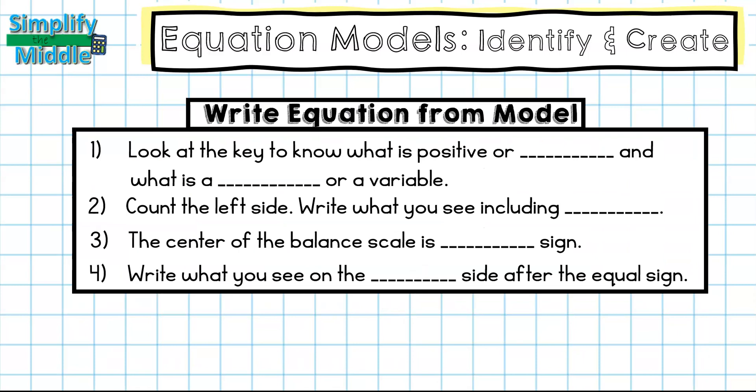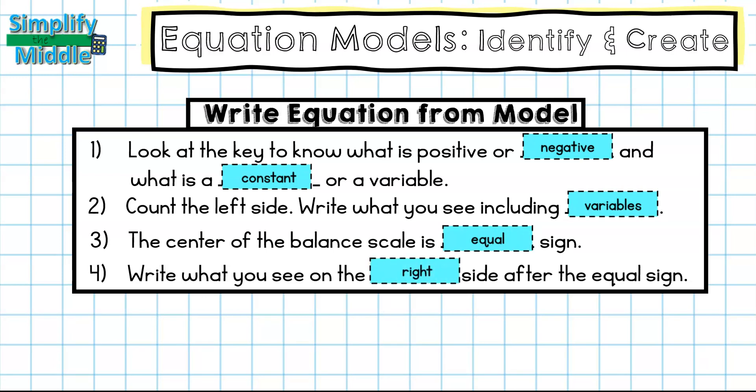When you're writing the equation from the model, look at the key to know what is positive or negative and what is a constant or a variable. Count the left side, write what you see, including variables. The center of the balance scale is the equal sign. And finally, write what you see on the right side after the equal sign.